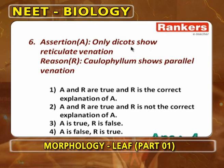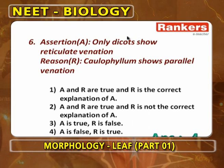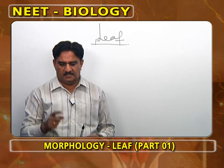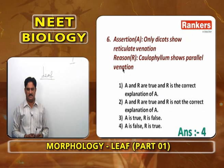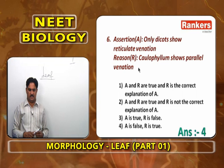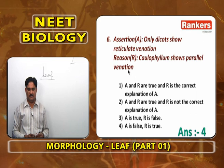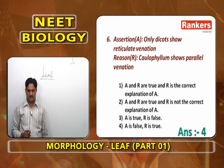Assertion: Only dicots show reticulate venation. Reason: Calophyllum shows parallel venation. You cannot say only dicots show reticulate venation because Calophyllum and Eryngium are two dicots with parallel venation — so A is wrong. But Calophyllum showing parallel venation is correct. Therefore, A is false and R is true.